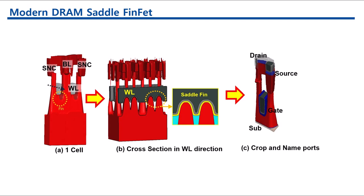In summary, these advancements aim to enhance DRAM cell performance by improving capacitance, reducing leakage, and maintaining a compact footprint. The use of advanced transistor structures and unique cell geometries is key to achieving these goals.